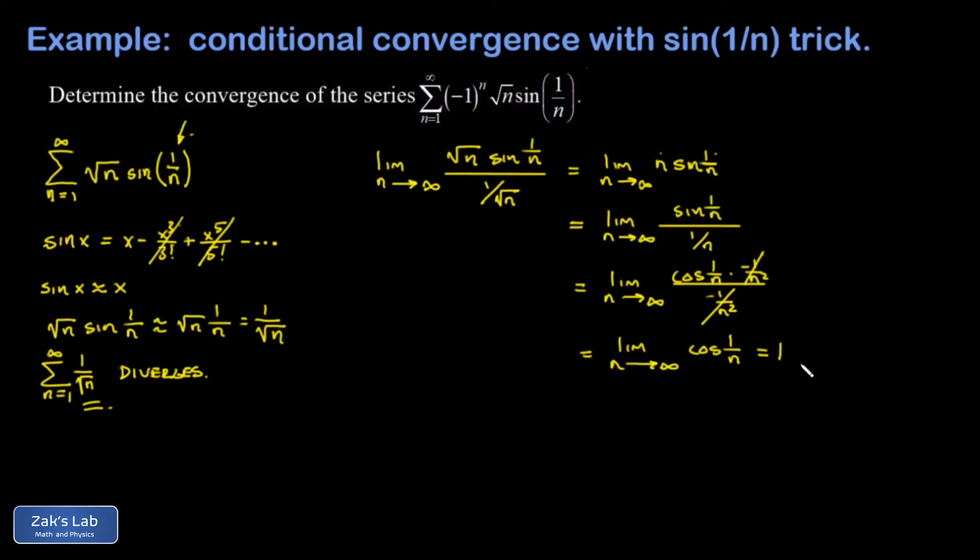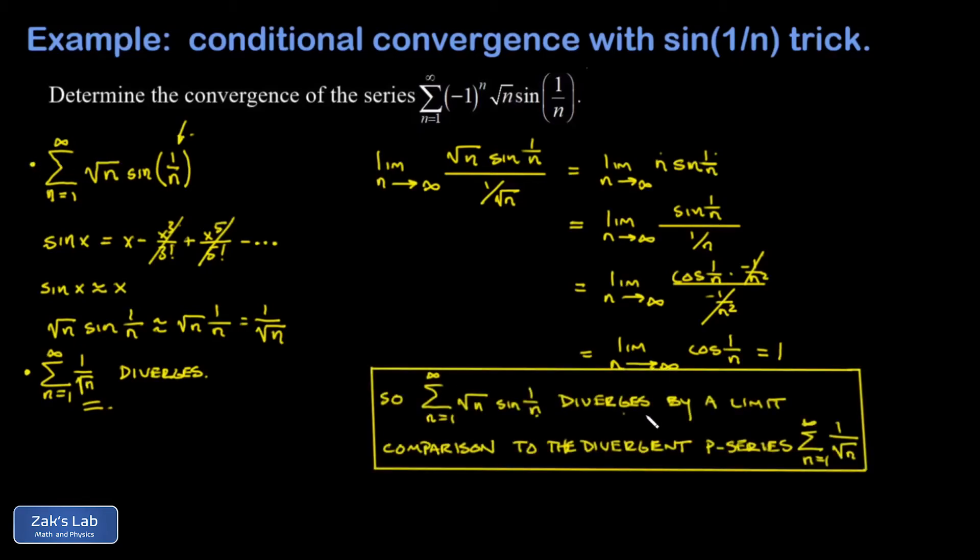Because the limit of the ratio of the terms of those two series came out to a finite number, we know they share the same convergence behavior. The series we were comparing to was divergent because it's a divergent p-series, and we conclude that our series of absolute values diverges. To state our answer in a really complete way, the original series of absolute values, square root n sine 1 over n, diverges by a limit comparison to the divergent p-series 1 over root n.